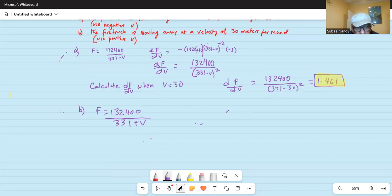Now I take the derivative and I'm going to use the positive V because now it's moving away, the fire truck. So df by dv is equal to the negative sign first and then minus 132,400 and 331 plus V in the numerator is minus 1 whose derivative is minus 2, times derivative of positive V is plus just 1.